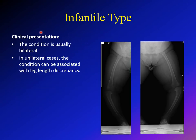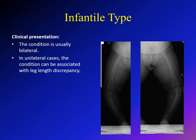Most cases of the infantile type are bilateral. If unilateral, there may be associated leg length discrepancy, with the affected varus side being shorter. The infantile type is very progressive because the patients have more growth potential — any disease affecting their growth will be more progressive than in the adolescent type, which has much less growth remaining.